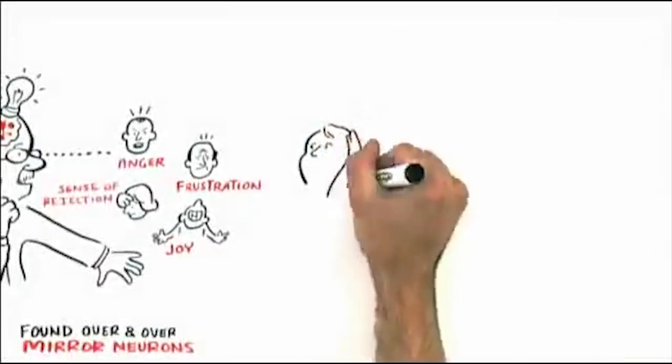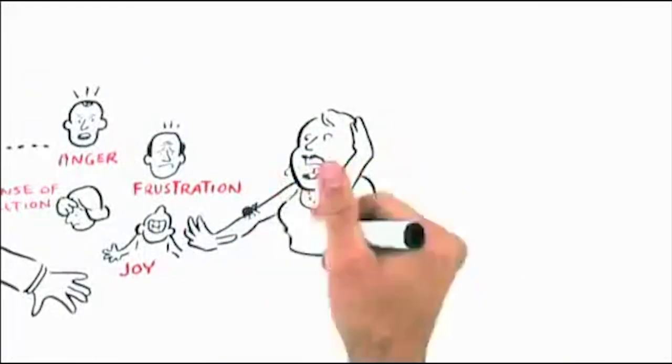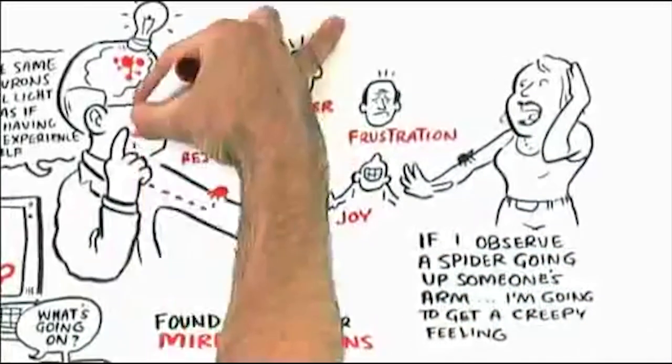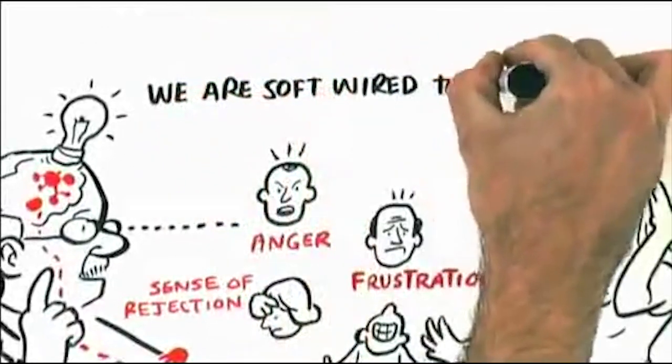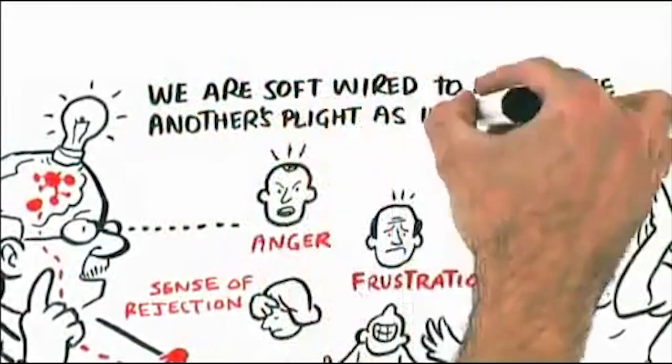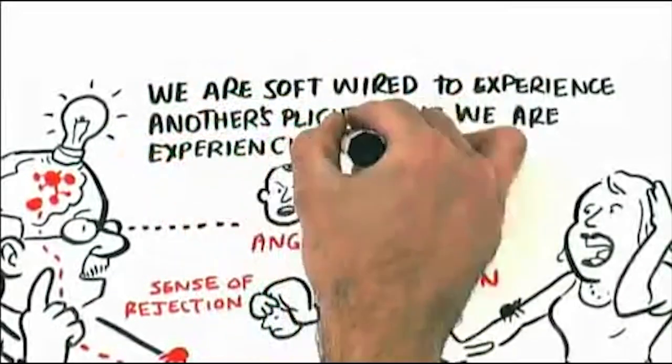Now, this isn't all that unusual. We know if a spider goes up someone's arm and I'm observing it going up your arm, I'm going to get a creepy feeling. We take this for granted, but we are actually soft-wired to actually experience another's plight as if we are experiencing ourself.